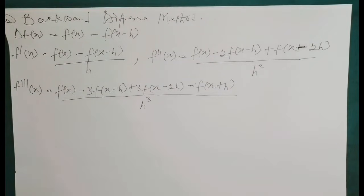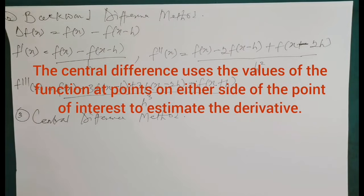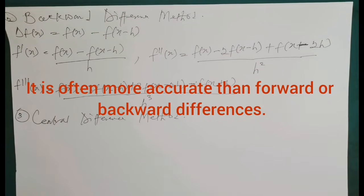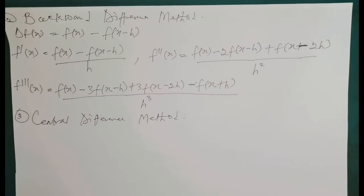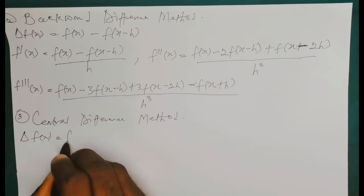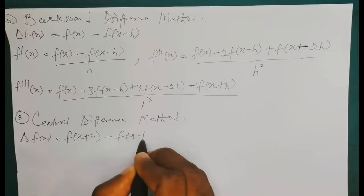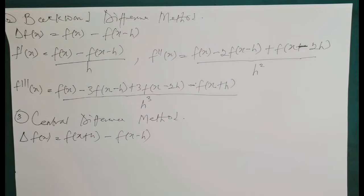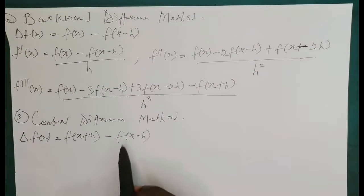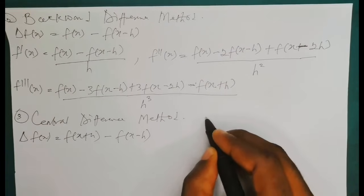Now let's look at the central difference method. The central difference method uses the value of the function at a point on either side of the point of interest to estimate the derivative. It is often more accurate than the backward or forward difference methods. By formula, delta f(x) = f(x + h) − f(x − h), using one step ahead and one step behind the point of interest.